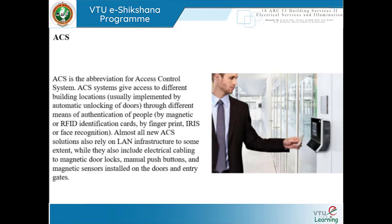Most access control systems rely on the LAN infrastructure to some extent, while they can also include electrical cabling because the door has magnets attached — a magnet or iron bar at the top, and a matching magnet on the door frame. Normally they are stuck together. When authentication happens, the magnets demagnetize through electrical power so the door opens, and when it closes again it re-energizes and the magnets lock. So it is a combination of extra-low voltage data signals as well as electrical cabling systems.